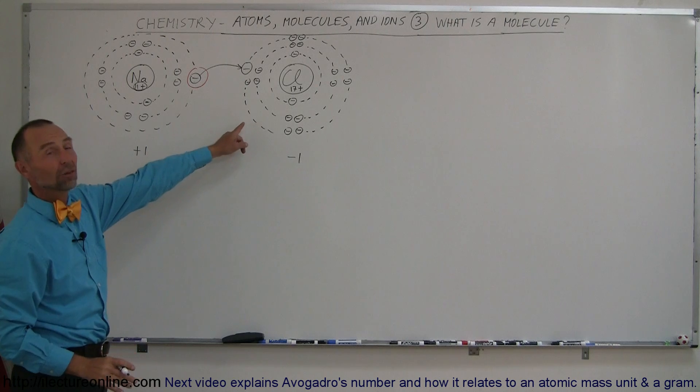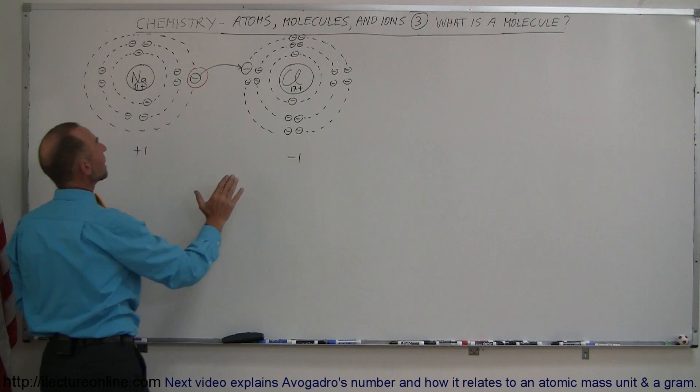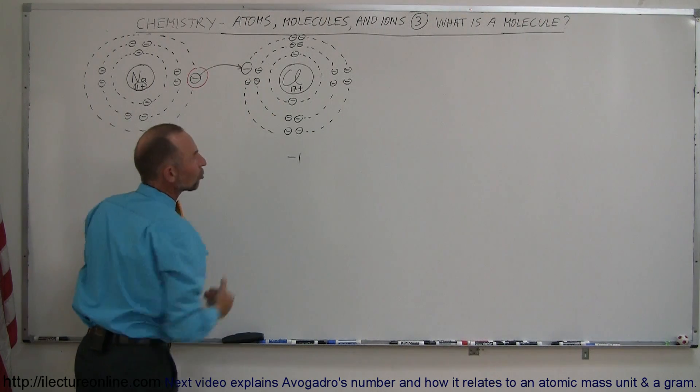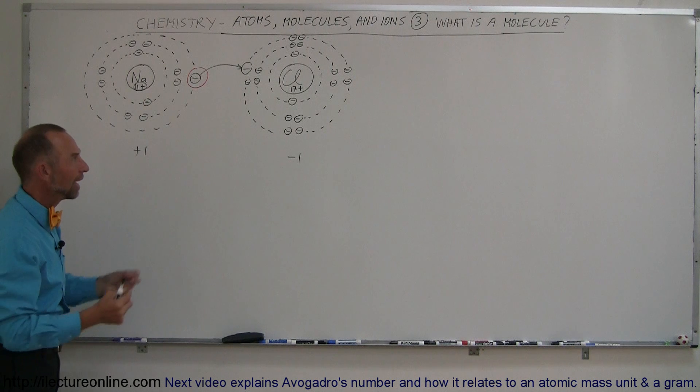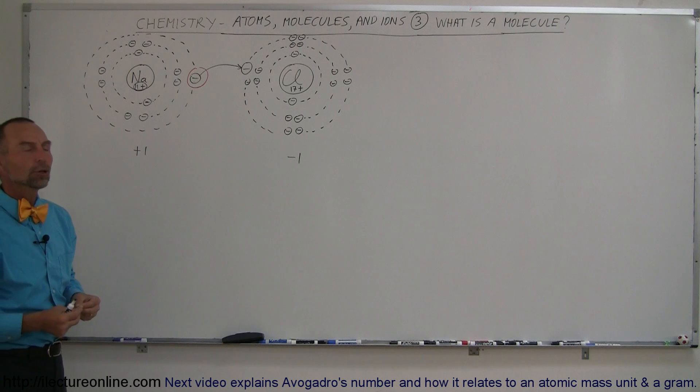This, of course, will now have an extra electron. This one will be missing an electron. Now those two ions, this being a cation, this being an anion, will end up attracting each other because they're now oppositely charged, and they will then form a bond. So now it's a molecule.